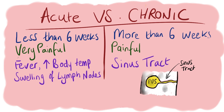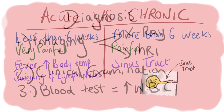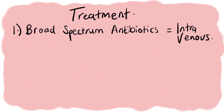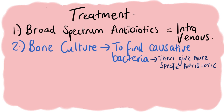Diagnosis is usually based on the symptoms the patient is experiencing, X-ray, and MRI scan. Blood tests can also show elevated levels of white blood cells. A bone culture is done to identify which bacteria is causing the infection, but firstly broad-spectrum antibiotics are administered intravenously, since the bone culture can take several days. After the culture results, more specific antibiotics can be given.